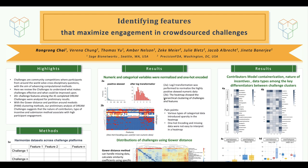Before going into our Gower distance results, I would like to show our first exploration attempt to make a cluster heatmap. We used more than 20 different features of challenges, including data types, number of submissions, whether it provides a prize, etc. The data we have is mixed-type data, so we first transformed non-numeric data into one-hot encoding. The numeric data was log-transformed because it's highly skewed, as you can see in figure 2a, along with min-max normalization.